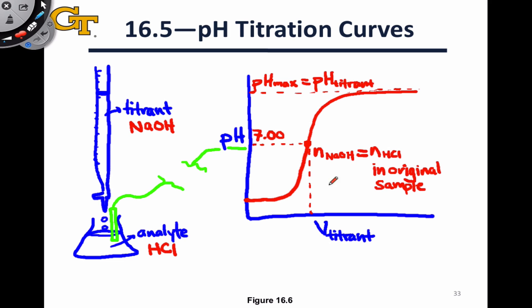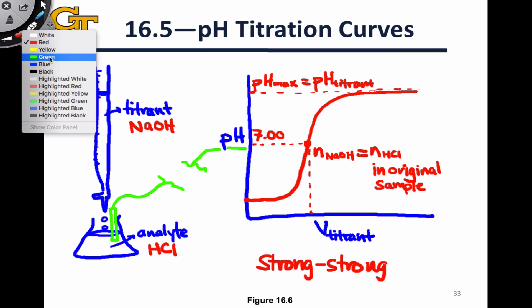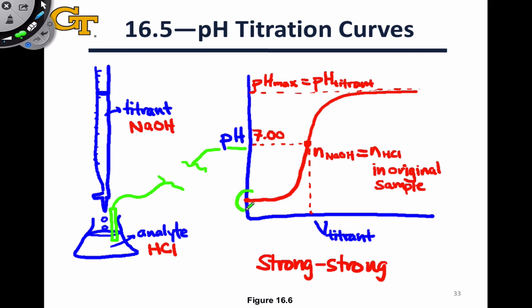So in terms of the information we can glean from a strong-strong titration curve like this, notice that we can identify that the analyte is an acid because the initial pH is lower than 7. We can identify the titrant as a base as the pH is increasing as we add titrant. We can identify the concentration of the titrant from this maximum pH, although that will usually be known by other means.